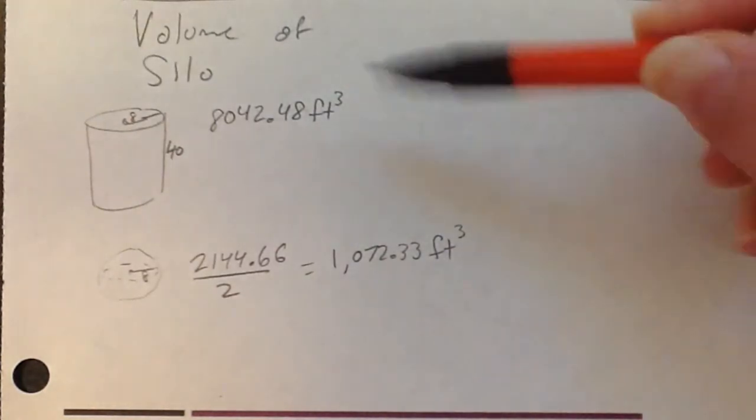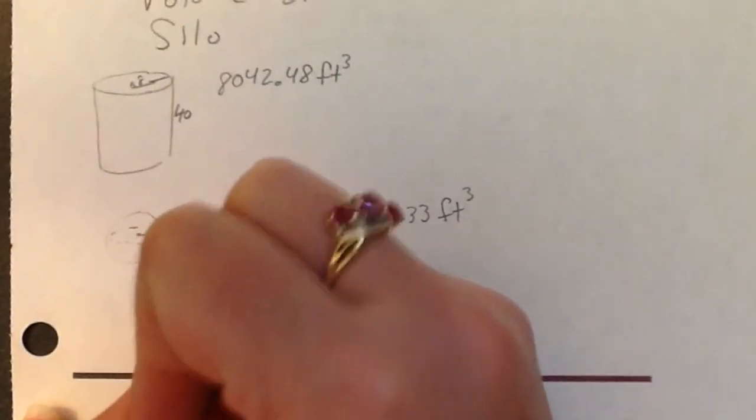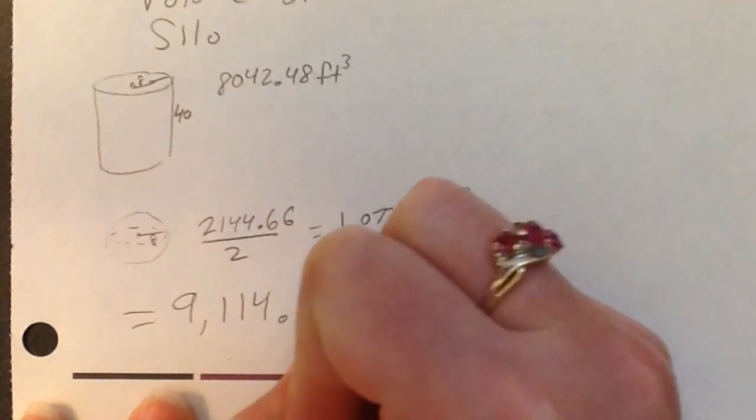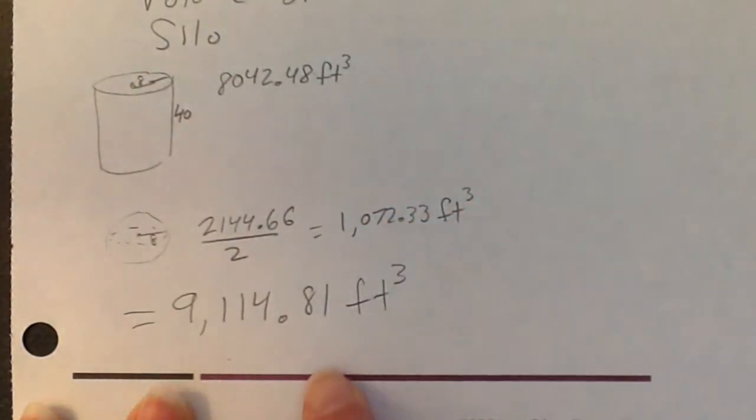And then we can just add together the cylinder, the half sphere, and then we'll know the volume of our silo. And I'm getting that the entire thing is 9,114.81-ish. So that's the silo.